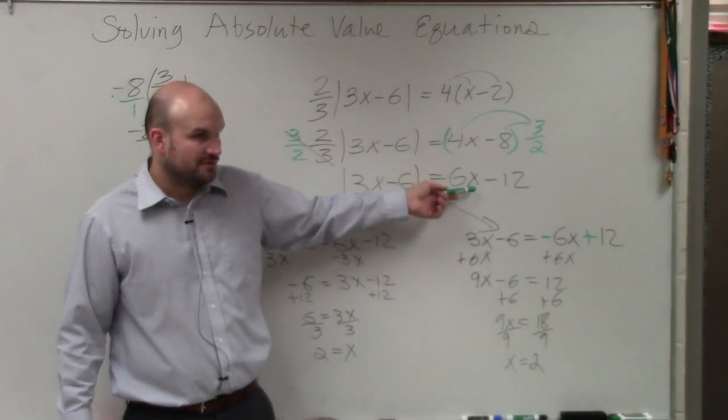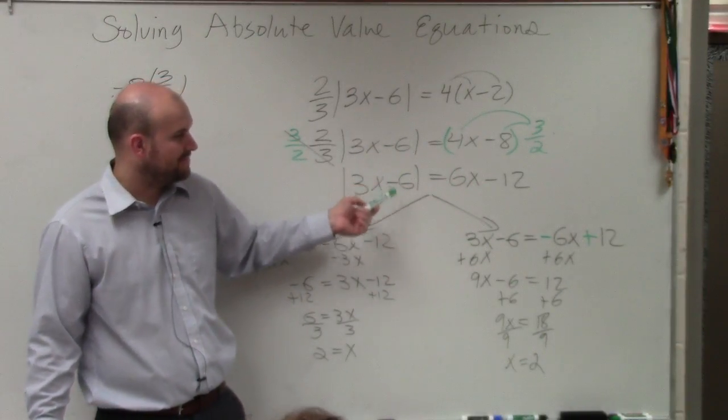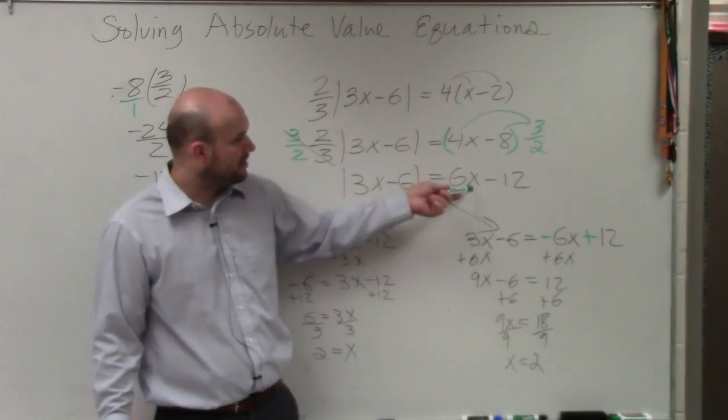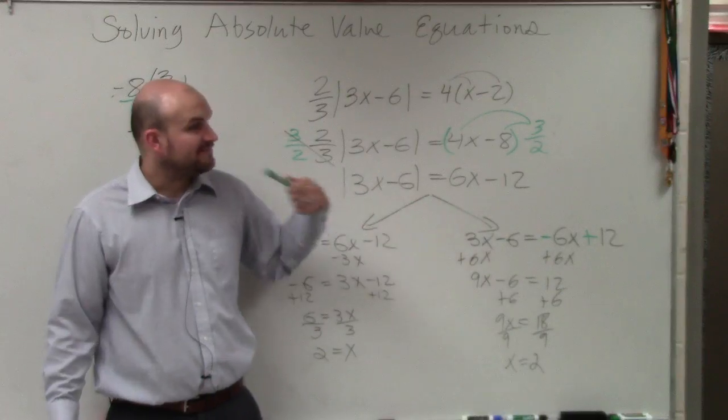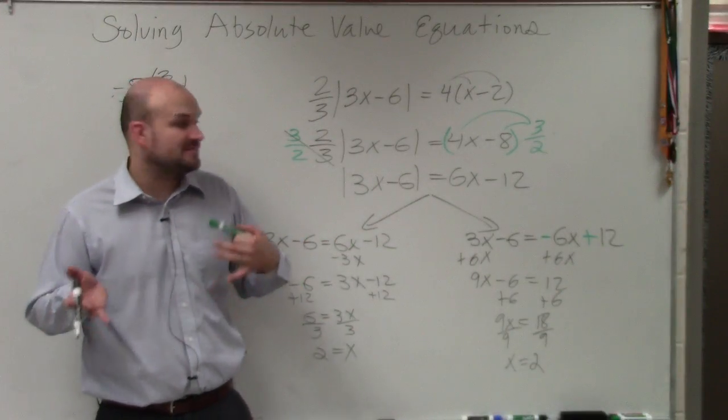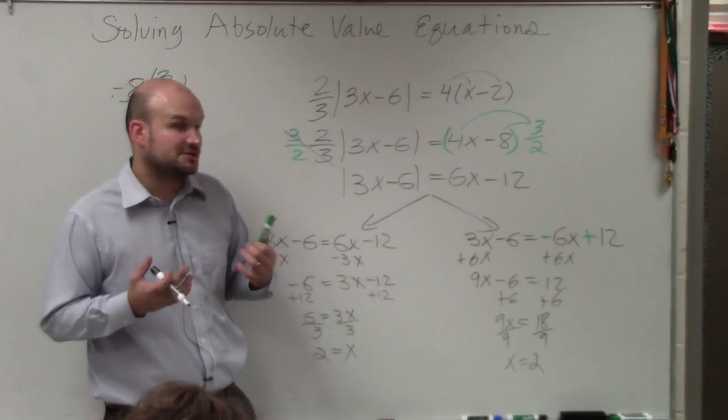Now, you could plug in 2 in for 2, but if you know you did your math right, then I'll try to save you some time. What I would recommend you do is plug in 2 only for what the absolute value is equal to. And if that is positive, then your solution works. If that turns out to be negative, then your solution is extraneous.